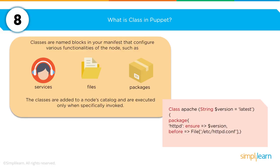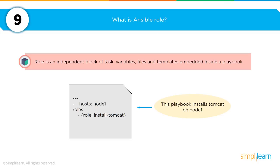A likely interview question about Puppet is: what is a class in Puppet? A class in Puppet is named blocks in your manifest that contain various configurations, which can include services, files, and packages. There is an example on screen of what a class looks like when written out. It's advisable to memorize just one class — the interviewer is looking for working knowledge, not memorized complete massive classes. Having one small class to illustrate your experience is extremely valuable, particularly in a technical interview.